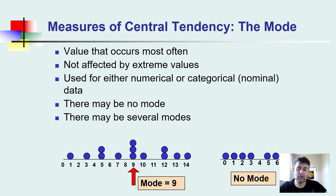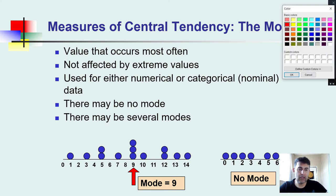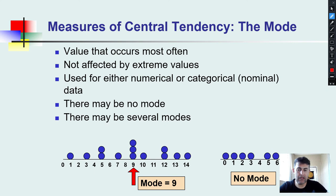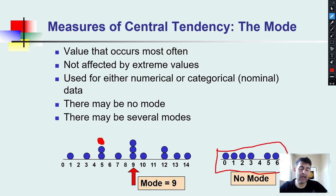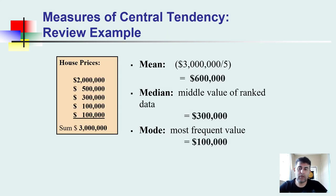For example, in a dataset, if 9 appears three times and both 5 and 12 appear twice, then 9 is the mode. But if we add another 5 to the data, now both 5 and 9 appear equally often — giving us two modes, a bimodal dataset. And if every single data value occurs only once, there is no mode.